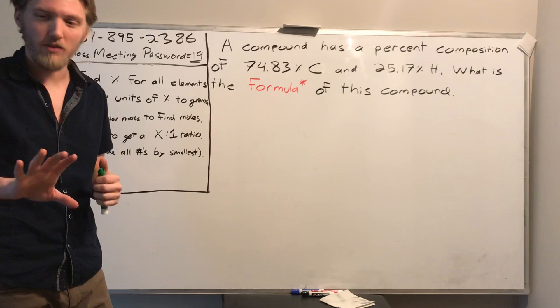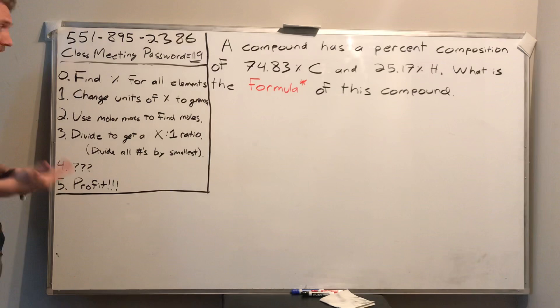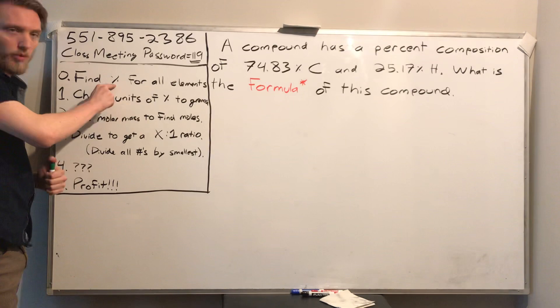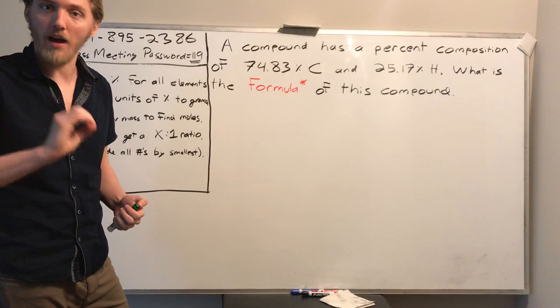Here are your steps — listed for you, and also in your notes. The zeroth step — the first thing you should do before even starting — is to find the percent composition for all the elements. You need to make sure all percent compositions are accounted for. You can check by making sure they add up to 100%.